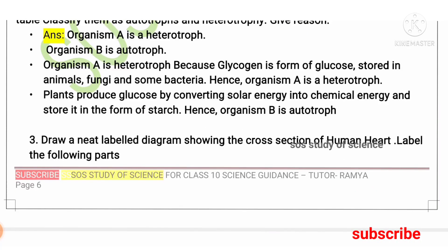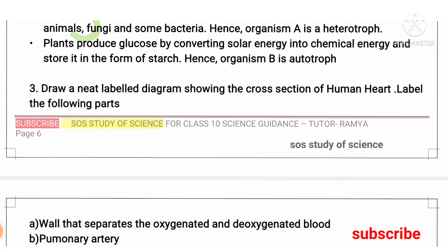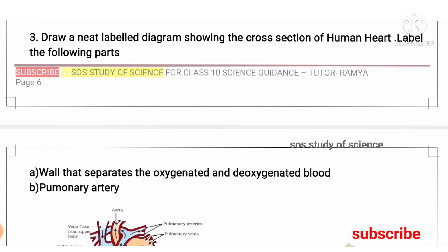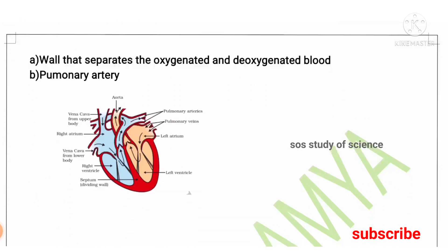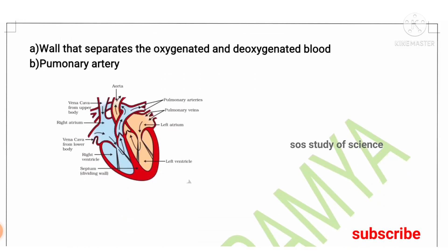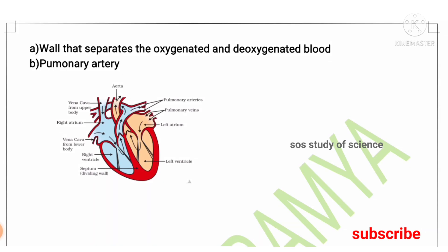Moving to the third question: you have to learn to draw a neat labeled diagram showing the cross section of the human heart, and also label all the parts — this is very important. Learn all the parts present in the human heart to get full marks.